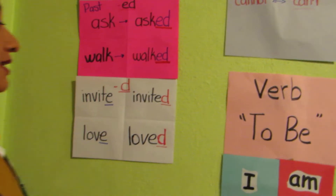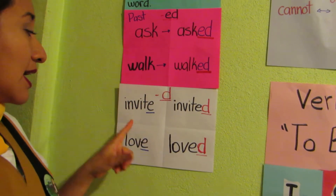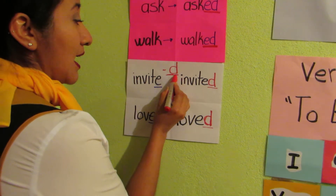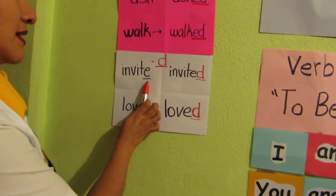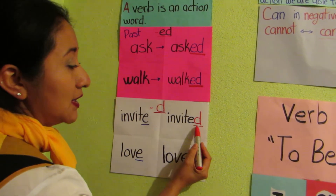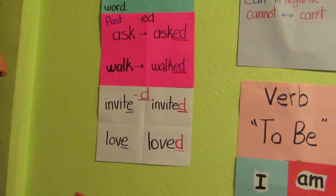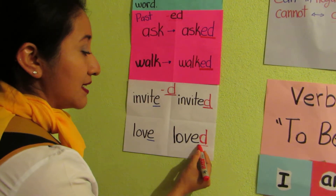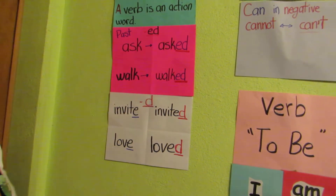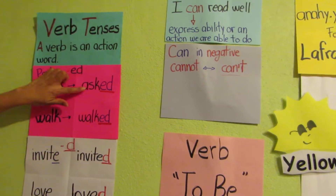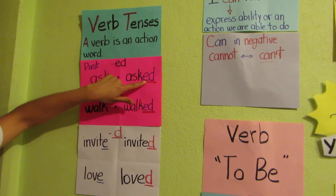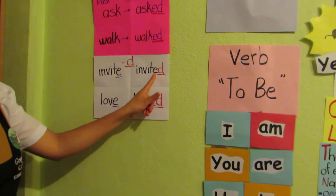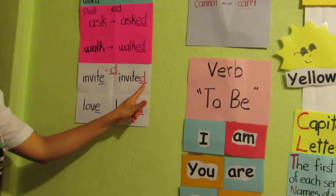But what happens when my verb finishes with the letter E? We only need to add the letter D at the end. For example, 'invite' becomes 'invited.' As you see, I write the letter D. 'Love' becomes 'loved' — I write letter D at the end. So ask gets -ED, but when the verb ends in E, I add only -D.